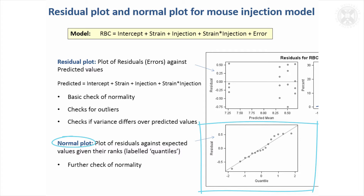This is something that you kind of develop an eye for. Some packages give actual tests of normality, but you need to watch with those because if you've got a small data set, they'll never come out as significant. If you've got a large data set, you might find that they significantly test non-normality, but it's such a small difference from normal that it really doesn't affect the results very much. So it's best to look at residual plots and develop an eye for assessing if there's anything untoward going on. In this example, I was happy that the errors were suitably distributed to do the general linear model.